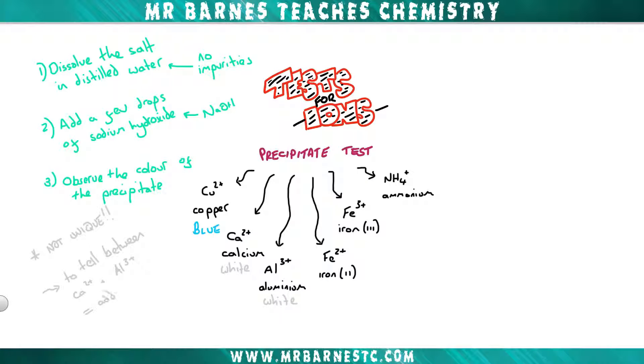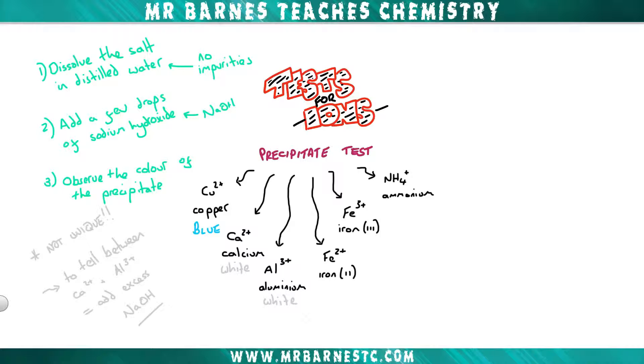And the solution here is to add excess sodium hydroxide. Now as you can see on the right hand side, when you add excess, so extra sodium hydroxide to calcium, nothing happens. The white precipitate remains.